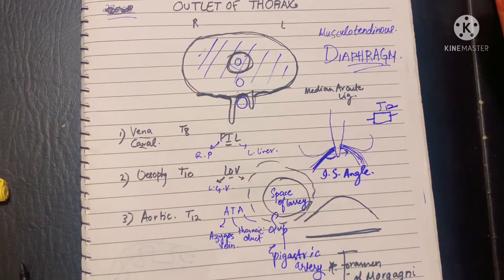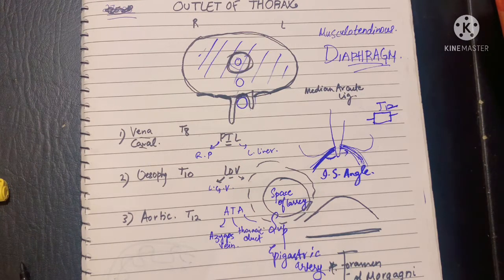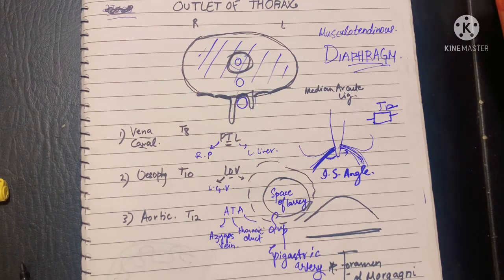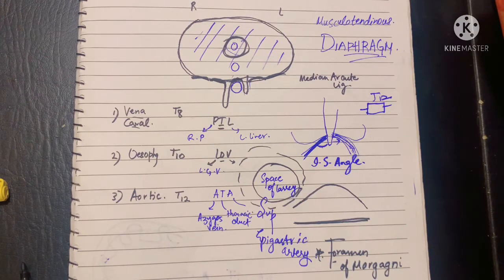Other small openings include the opening for the musculophrenic artery, which perforates the diaphragm at the level of the 9th costal cartilage. There are also openings for intercostal vessels and nerves, as well as passage of sympathetic trunks, splanchnic nerves, and the phrenic nerve. So, this was all about the outlet of the thorax. Thank you so much for watching.